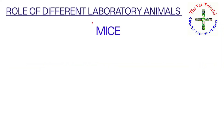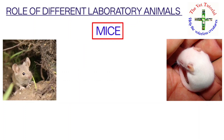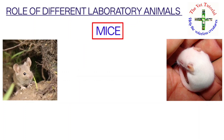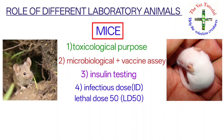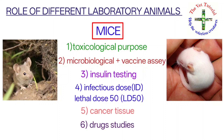Let's start with the role of different laboratory animals in various fields. First is mice. Mice are used for toxicological purposes, microbiological and vaccine assay purposes, insulin testing, infectious dose and lethal dose 50 purposes, study on cancer tissues, and various drug studies, especially toxicology of various drugs.